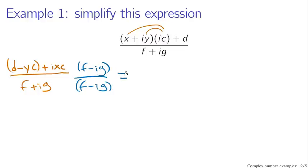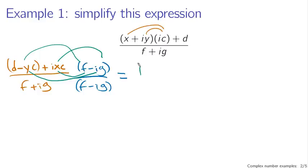Now expanding this out is a little bit messier, but fundamentally you've seen this sort of thing before. You have real part times real part, and imaginary part times imaginary part in the numerator. From the first term you get f times (d minus yc). From the second term you have minus ig times ixc, which is going to give you xcg — you have a minus i times an i, which gives us a plus.